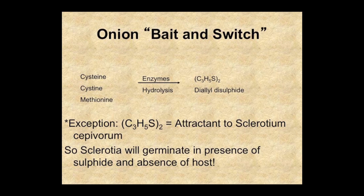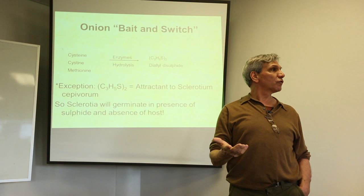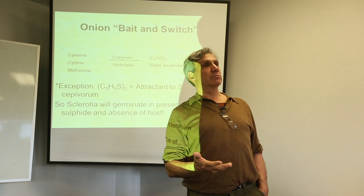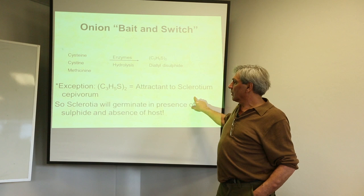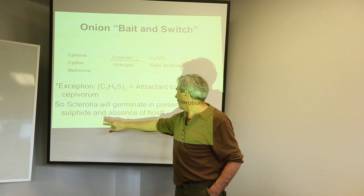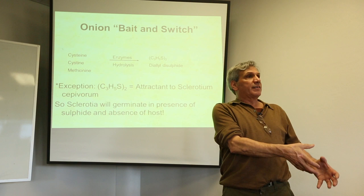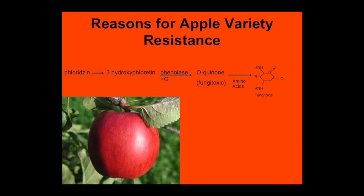Here's an interesting experiment — the onion bait and switch. Sulfur-bearing amino acids, via enzymes, are turned into diallyl disulfide, one of the medicinal sulfur compounds that makes garlic so medicinal. Allicin is another. This diallyl sulfide is a deterrent to onion pests — with the exception of sclerotium infection, which is the co-evolutionary arms race. The sclerotia germinate in the presence of the sulfide but absence of the host, so the onion is used as a decoy, then removed, and the disease shows up with nothing to eat and wipes itself out.